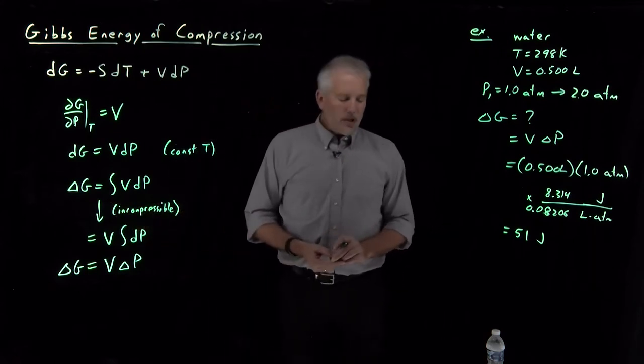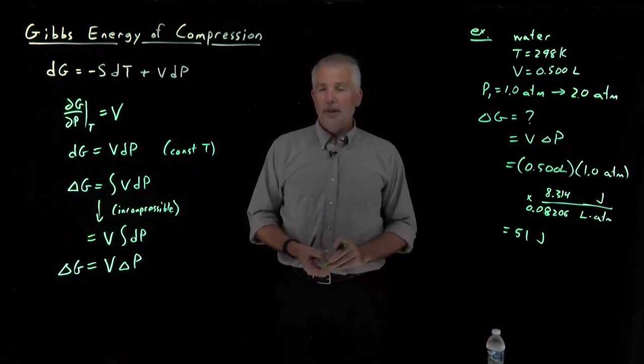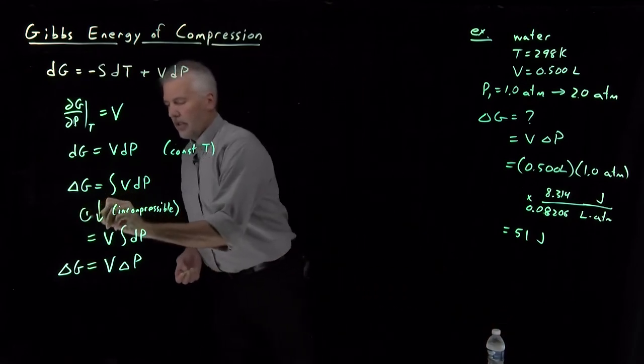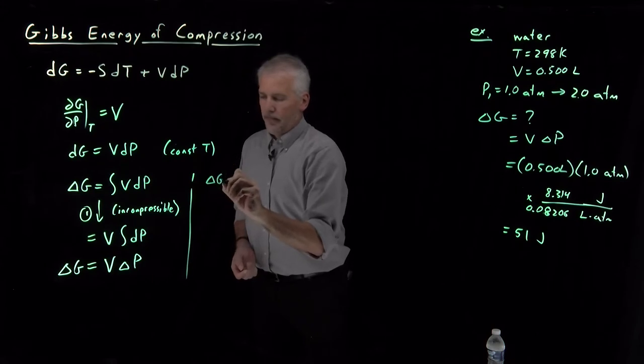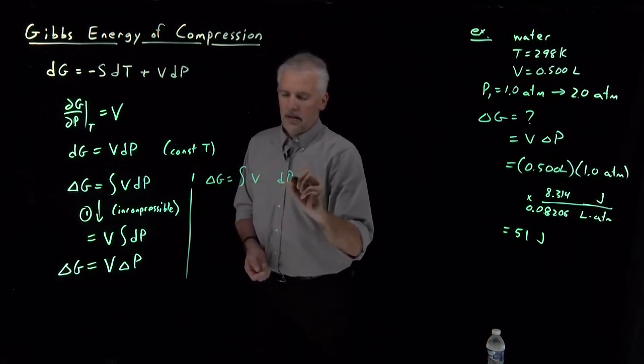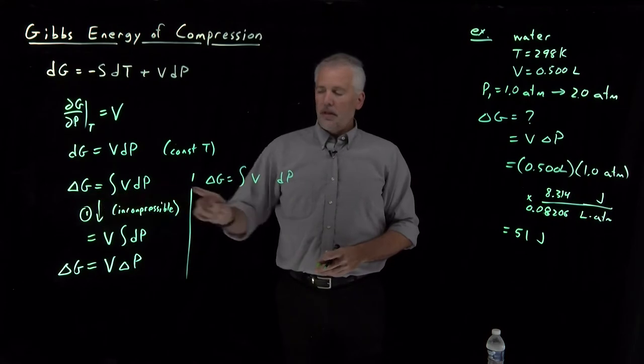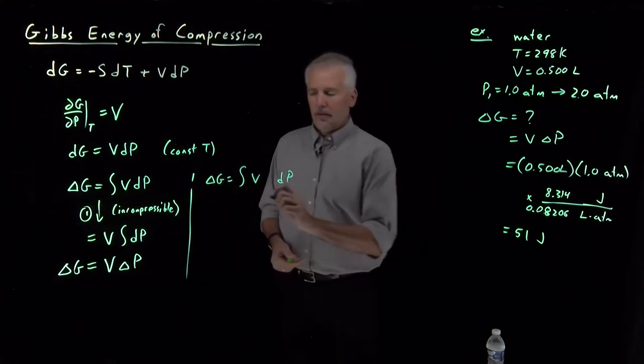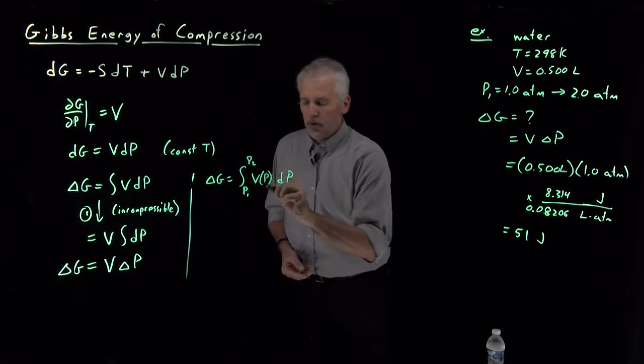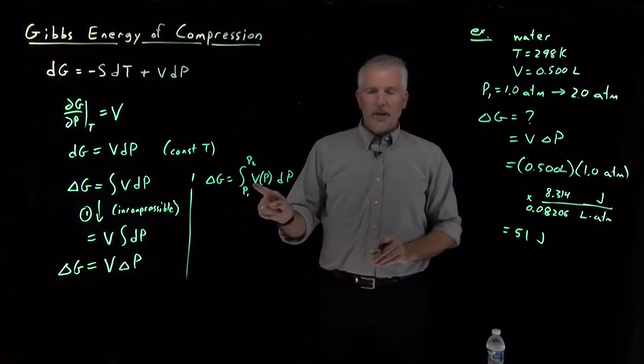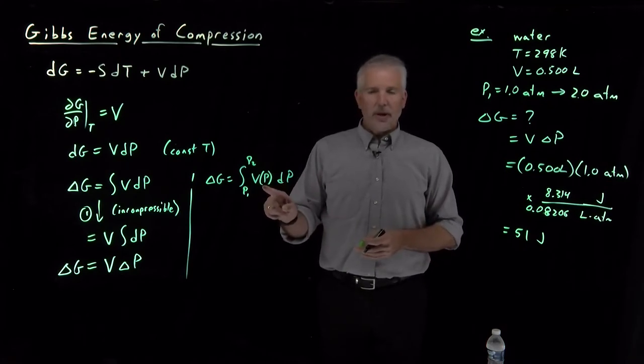Not everything can be treated as incompressible, however. If this bottle contained not a liquid, not an incompressible liquid like water, but if it contained a gas, maybe an ideal gas, then we would have to make a different assumption. The good news is we can still do that if we back up to before we made our assumption that the liquid was incompressible. This result is always true. Free energy change is volume times dP integrated from some initial pressure to some final pressure. If we don't pull the V out of the integral, if we acknowledge that the volume might in fact be changing as I change the pressure, the volume is a function of pressure, so I have to leave it inside this integral.